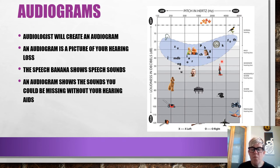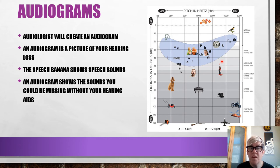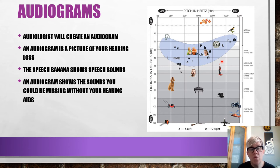You can see this blue banana shape — this is called a speech banana, and all these letters inside it are speech sounds, showing the pitch and decibel level at which we hear different sounds in speech. Low and loud sounds like certain vowels sit at one end, while higher, quieter, softer sounds sit at a higher pitch. The audiologist will plot onto the graph at what pitch and decibel you hear different speech sounds, creating an audiogram just for you — a picture of your hearing loss.